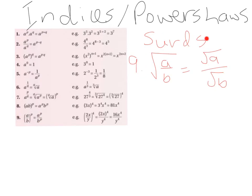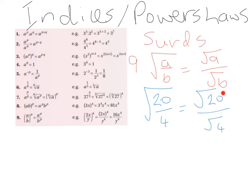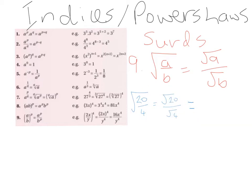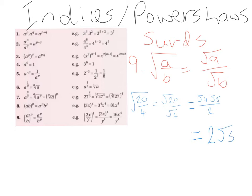We can also use Law 9 to help us with surds. Root of A divided by B can be broken down to root A divided by root B. For example, root 20 over 4 can be broken down to root 20 divided by root 4. Root 20 is root 4 times root 5 — because 4 times 5 is 20 — divided by 2, because the square root of 4 is 2. The 2s cancel, and since root 5 can't be simplified, we end up with root 5.